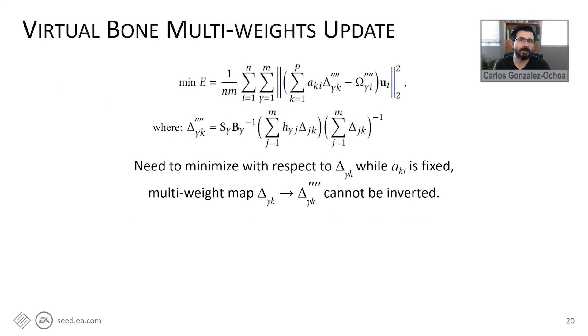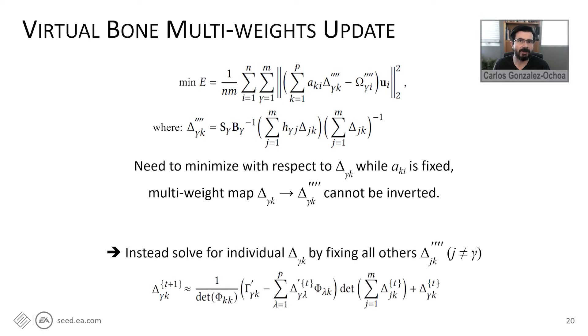The next step, we are going to update the virtual bonds multi-weights by minimizing the following objective function. Remember, the scalar weights are kept fixed in this step. Unfortunately, this function is linear to delta 4 prime, but we cannot solve delta directly because the linearization map cannot be inverted. However, we can invert the hierarchical, the coordinate changing and the continuous sampling maps and solve for delta prime. For implementation, we have derived an explicit formula to go from delta prime to delta using an iterative method. But please refer to the paper for more details.